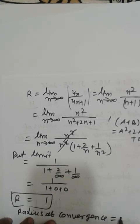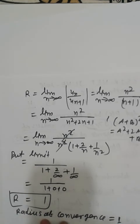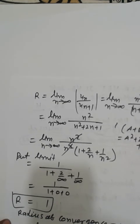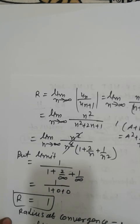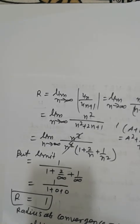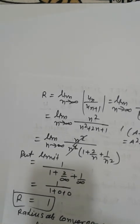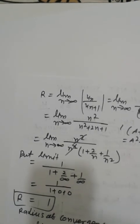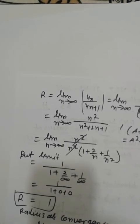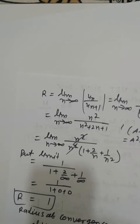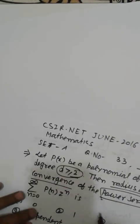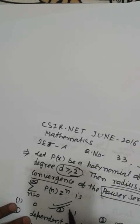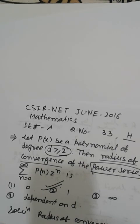The radius of convergence equals 1. So option 2 is correct. Thank you.